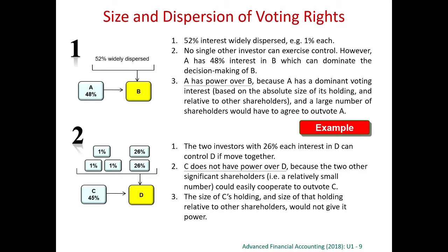Therefore, if we can demonstrate that basically all these other 52% shareholders never go to the AGM, or only a minority of them will vote, then even though A has got only 48%, A always wins. If this is the case, the 48% investment in B can dominate the decision making of B. And therefore, A actually has got the power over B.